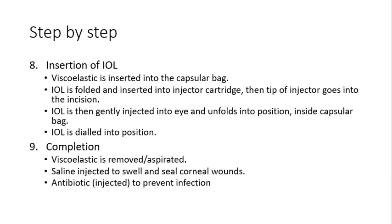Step eight is IOL placement. Viscoelastic is injected into the capsular bag. The intraocular lens is folded in half, inserted into an injector cartridge, and the tip of the cartridge is placed into the incision and gently injected into the eye. The lens unfolds into position inside the capsular bag and is then dialed into position as the surgeon maneuvers it to the desired location.